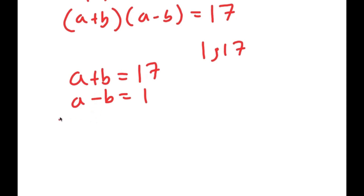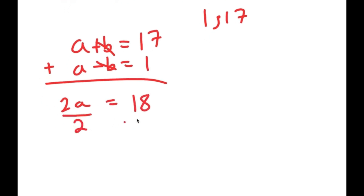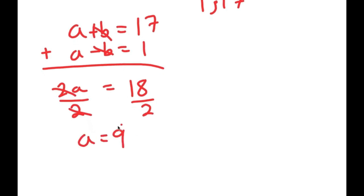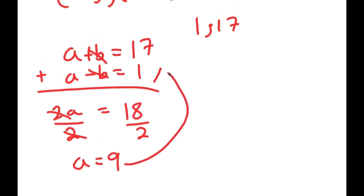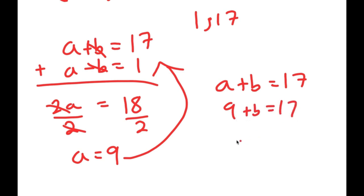Now I'm going to add these two equations together. a plus a is 2a, and b minus b cancels out, and 17 plus 1 is 18. So I get 2a equals 18, and if I divide both sides by 2, I get a is equal to 9. Now I can plug a equals 9 back into a plus b equals 17: 9 plus b equals 17, meaning b is equal to 8. So a equals 9 and b equals 8.